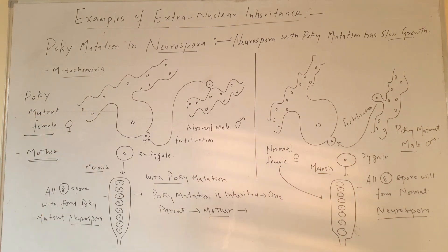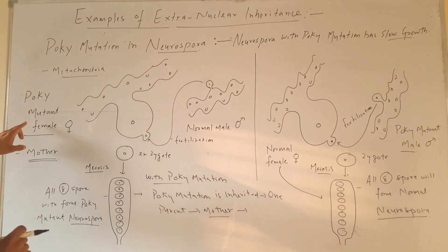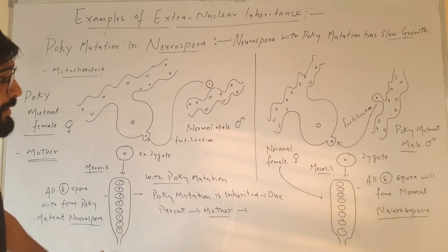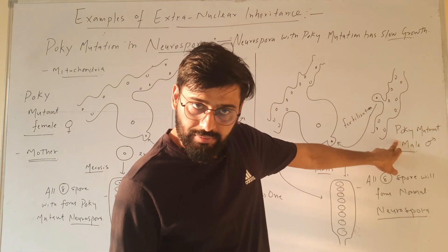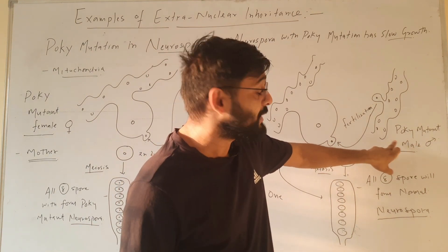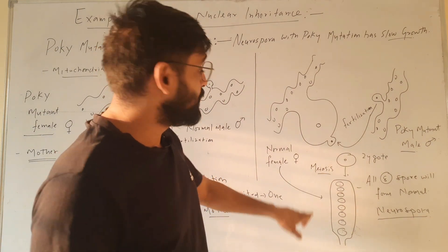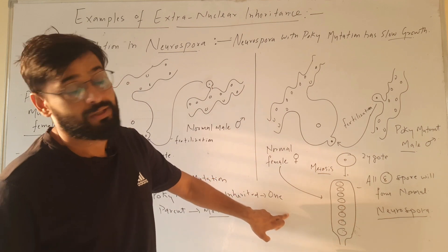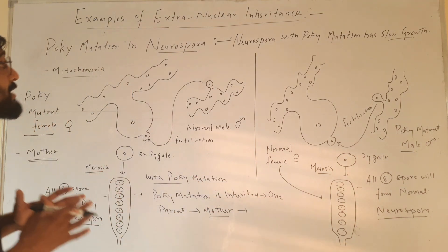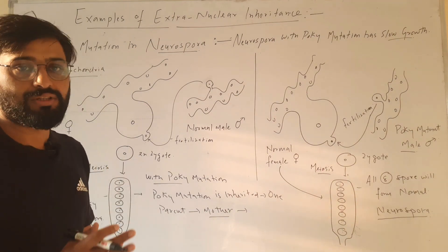This is poky mutation in Neurospora. In the case of poky mutation, if the mother is mutant then all of the progeny will be mutant. If the mother is normal and the male parent is mutant, then all the progeny will be normal, because the gene for poky mutation is inherited from the mother only. This is the case of extra nuclear inheritance in Neurospora through poky mutation.